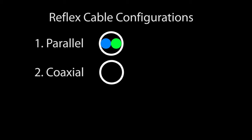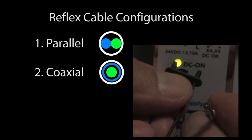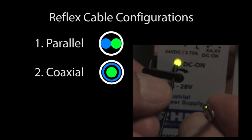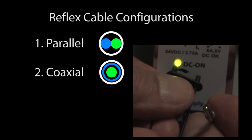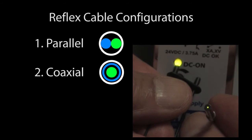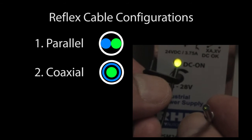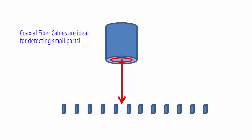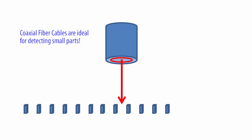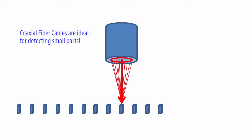In coaxial cable, the received fibers are arranged concentrically around the transmit fibers. Let's hold it up to the LED and as I switch fibers, you can see the pattern of fibers in the head. Here is the transmit fiber and here is the received fiber. This coaxial arrangement of the fibers makes this cable ideal for detecting very small objects. The narrow transmit beam pinpoints the small item you want to detect while the large ring of received fibers gathers the reflected light from that small item and returns it to the amplifier.